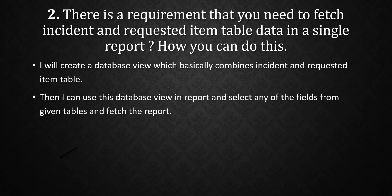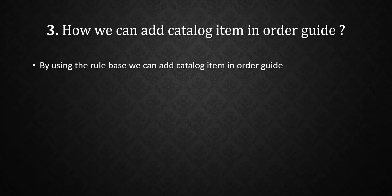You can say: I will create a database view which combines the incident and requested item table, then I can use this database view in the report and select any of the fields from the given tables to fetch the report. Basically, we create a new database view, join the incident and requested item tables, and use that view in the report.